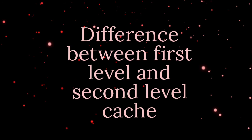The next question was: difference between first-level and second-level cache in Hibernate/JPA. First-level cache comes by default with Hibernate and resides at the session level. Second-level cache can be configured using EhCache or via property file configuration, and it resides at the SessionFactory level.